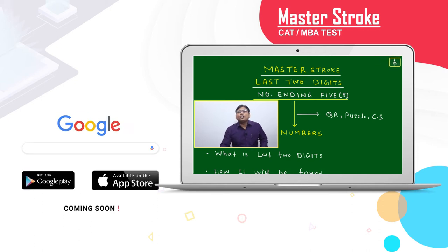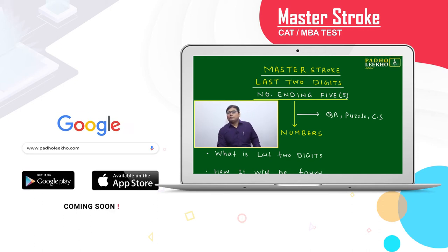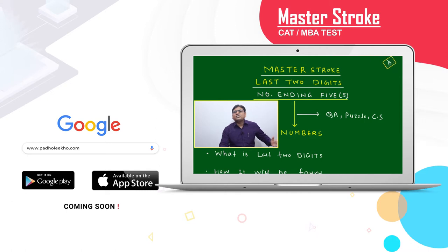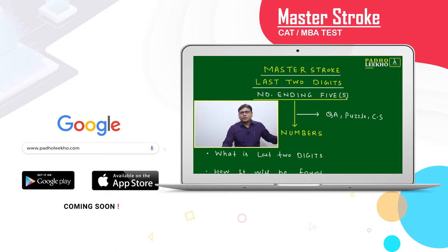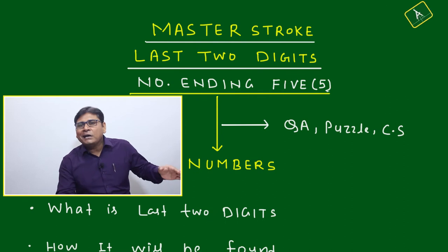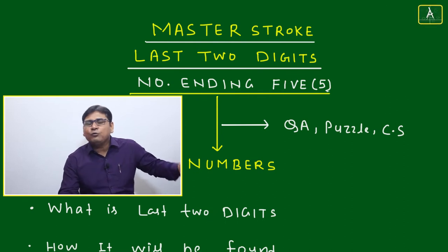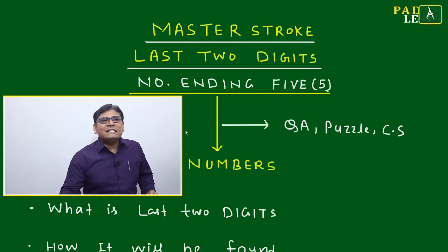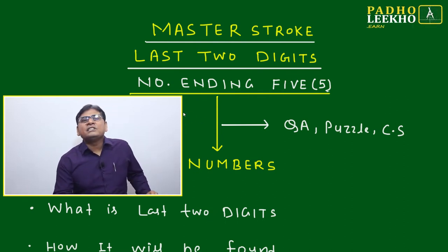Welcome to the master stroke of last two-digit numbers ending with five. We have covered last two digits in many sessions related to numbers ending with zero, one, two, three, and four. This session covers the last two digit of numbers ending with five.